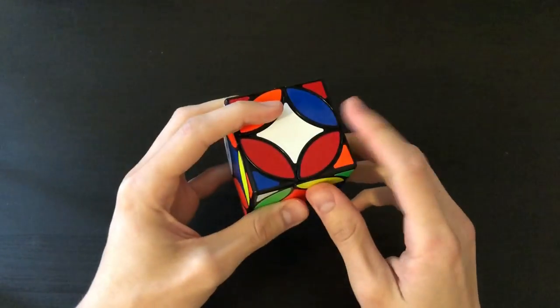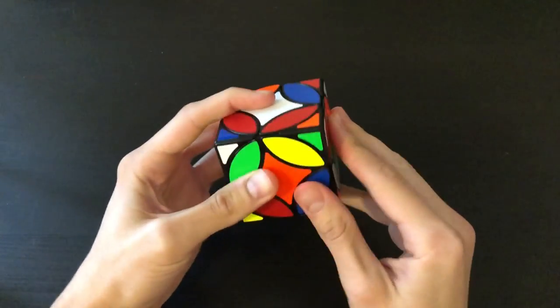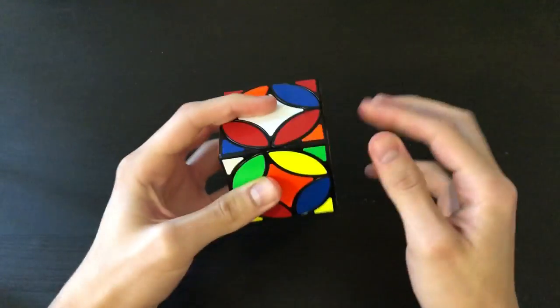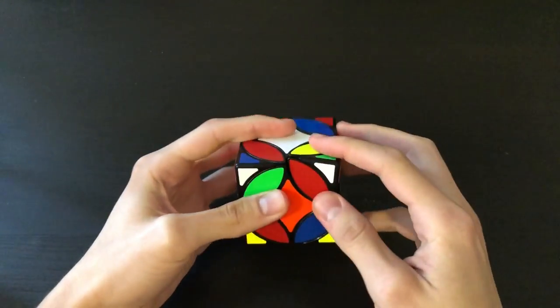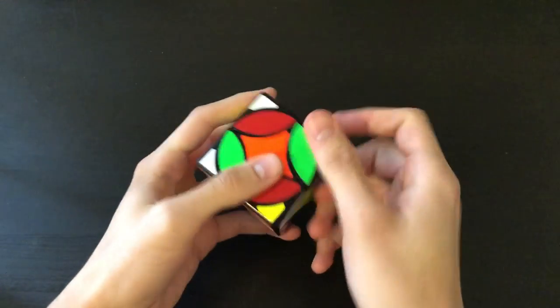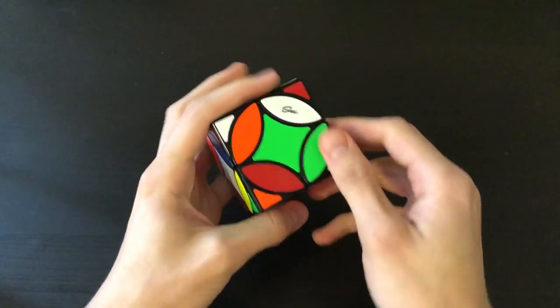So this puzzle turns very well. It's a little hard to turn at times, only because the wheel gets misaligned, and it has to be perfectly aligned, otherwise it won't turn. So that's going to be a little frustrating, I think, during the solve.